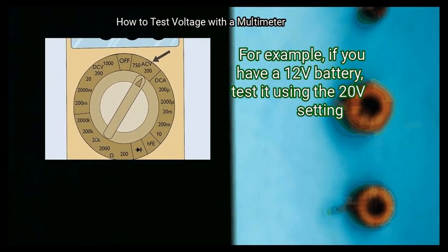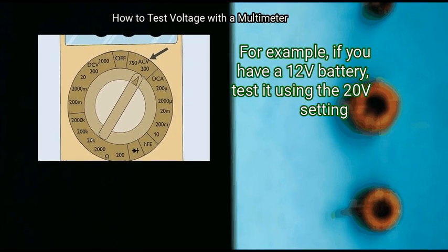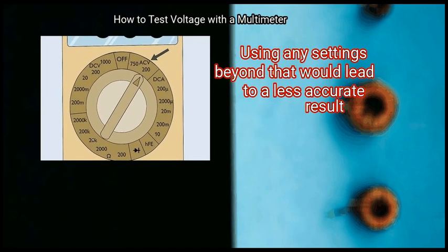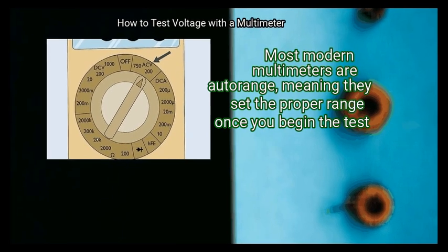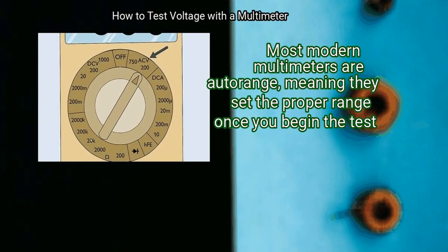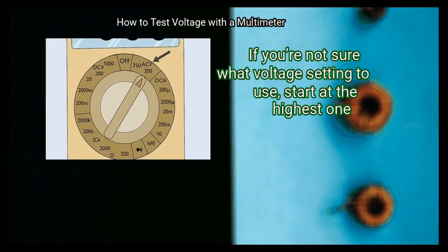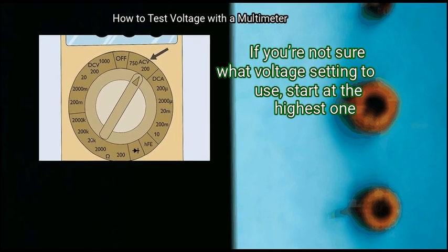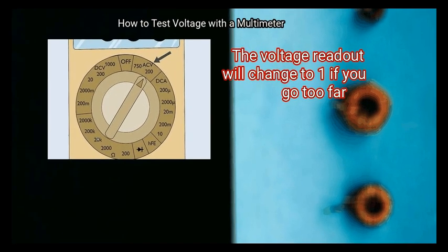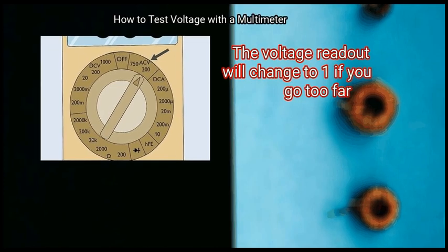For example, if you have a 12 volt battery, test it using the 20 volt setting. Using any settings beyond that would lead to a less accurate result. Most modern multimeters are auto-range, meaning they set the proper range once you begin the test. If you're not sure what voltage setting to use, start at the highest one. Work your way back until you get an accurate result. The voltage readout will change to 1 if you go too far.